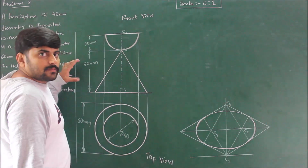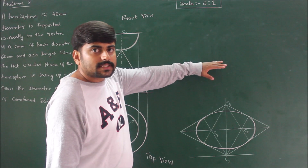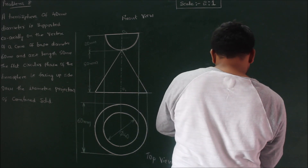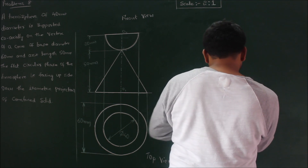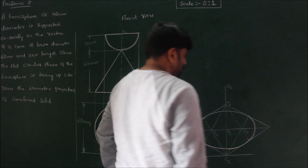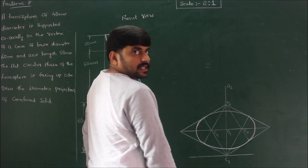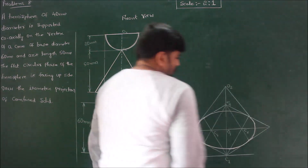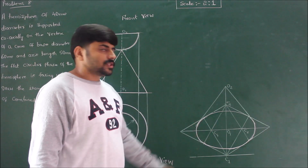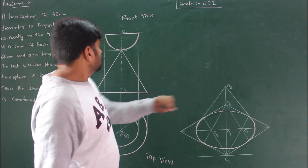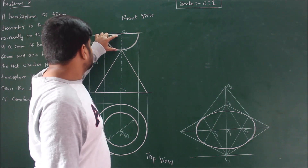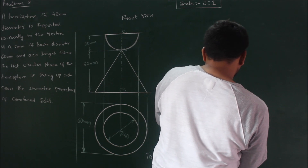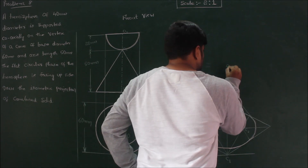With center O1, measure the height of the cone which is 50 mm. Choose five boxes vertically upwards and mark center O2. From center O2, draw the tangents to the circle drawn by the four-center method. This completes the isometric projection of the cone. From center O2, measure the axis of the hemisphere which is 20 mm, so mark two boxes vertically upwards to get center O3.